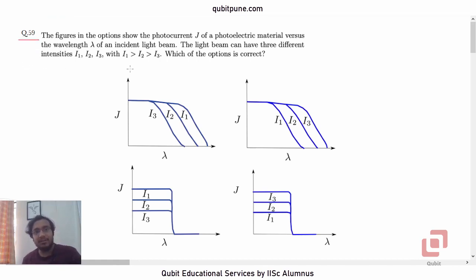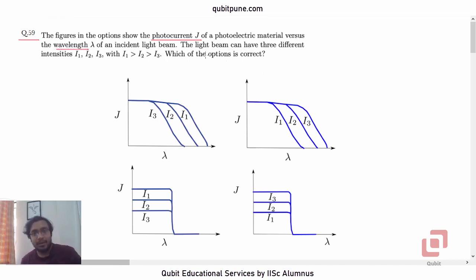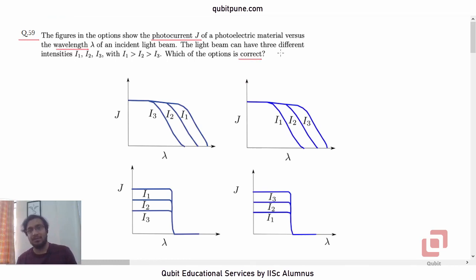The figures in the options show the photocurrent J of a photoelectric material versus the wavelength lambda of an incident light beam. The light beam can have three different intensities, I1, I2, I3, with I1 being the greatest and I3 being the smallest. Which of the options is correct?